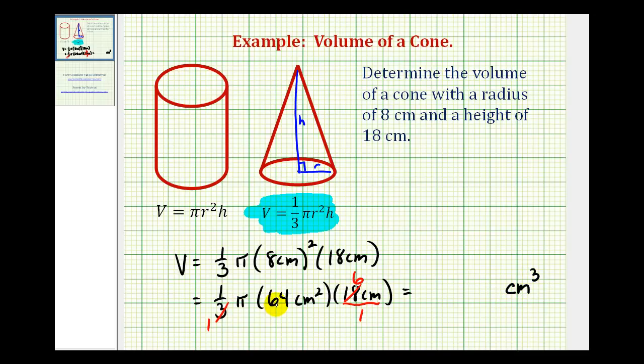And now we have pi times 64 times six. Now to find the exact volume, we'll leave pi in our product. So let's go ahead and put the pi here. And now we'll find the product of 64 and six.